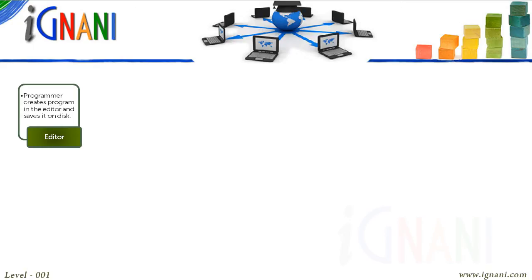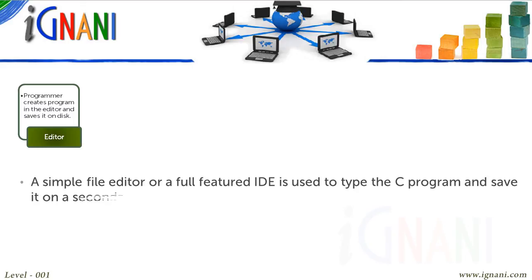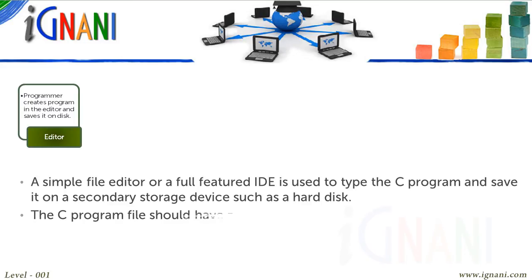Creating a program: In this stage we use a simple file editor, or a full-featured IDE such as C-Free, Microsoft Visual Studio, or Eclipse, to type the C program and save it on a secondary storage device such as a hard disk. The C program file should have a .C extension, as per the standard naming convention for C programs.